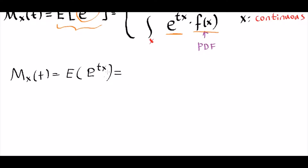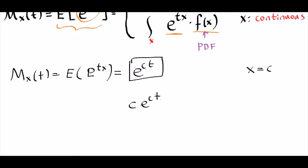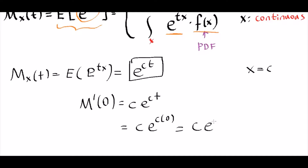For a degenerate random variable where X is equal to a constant c, the moment generating function is equal to e to the ct. Now we can find the expectation: the expectation is the first derivative and we plug t equals to zero. The derivative of e to the ct is c times e to the ct, and if we plug in t equals zero we obtain c times e to the zero, which equals c.